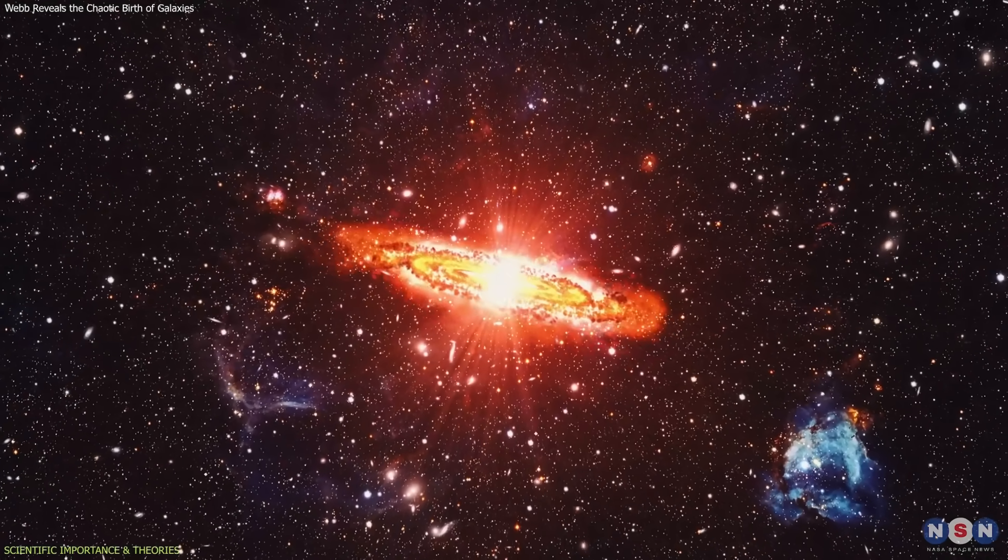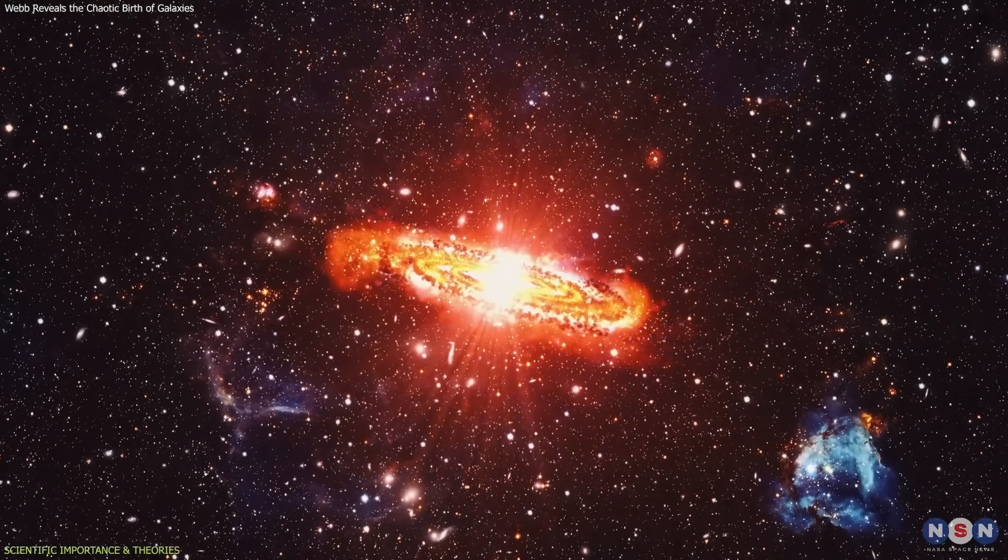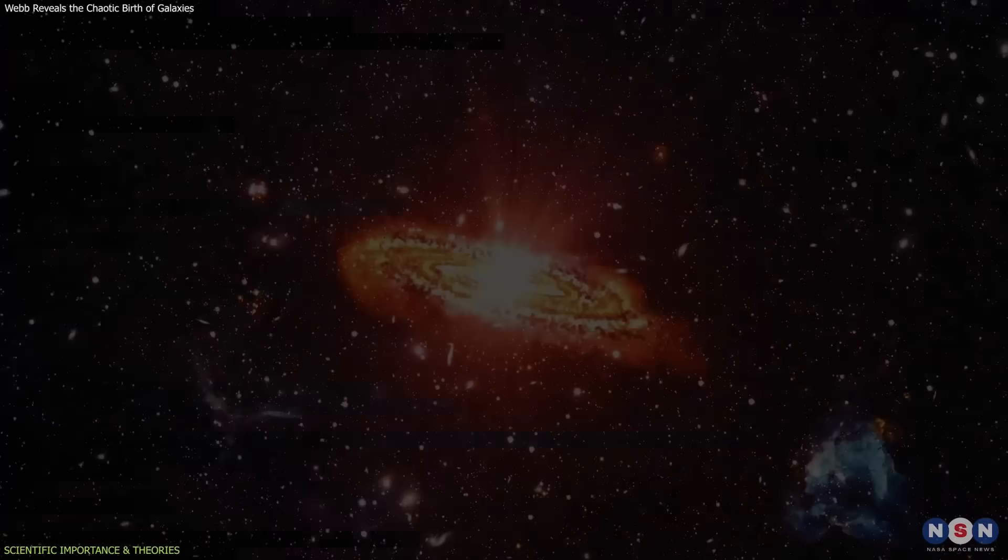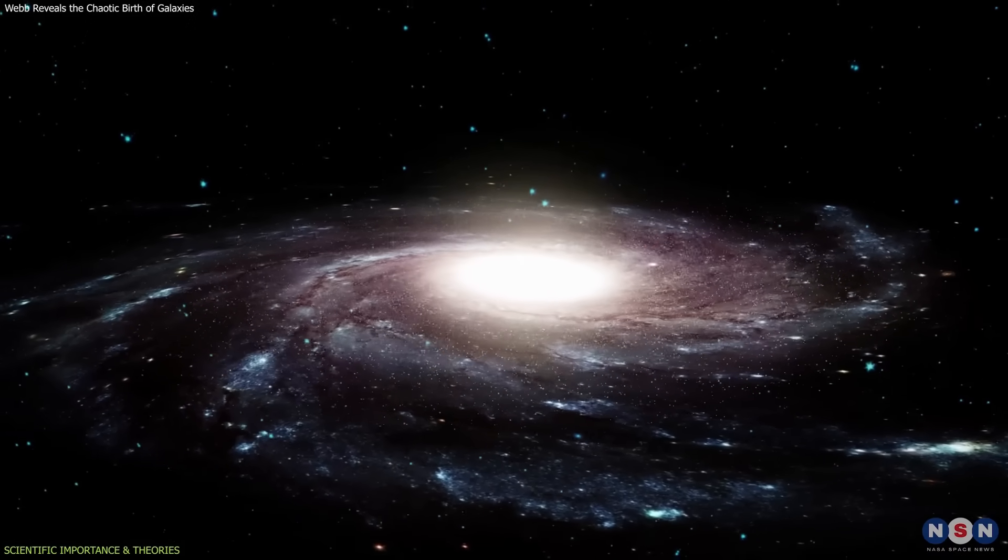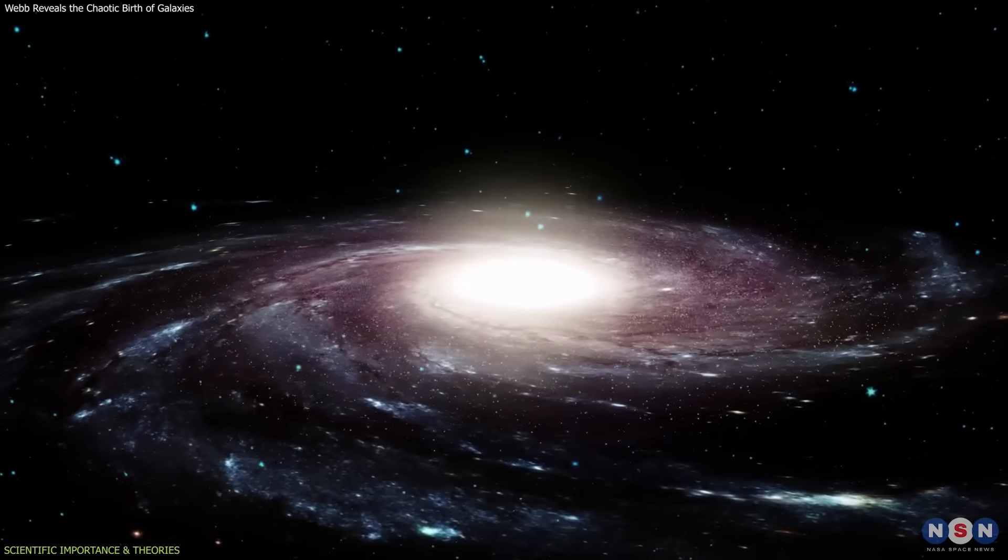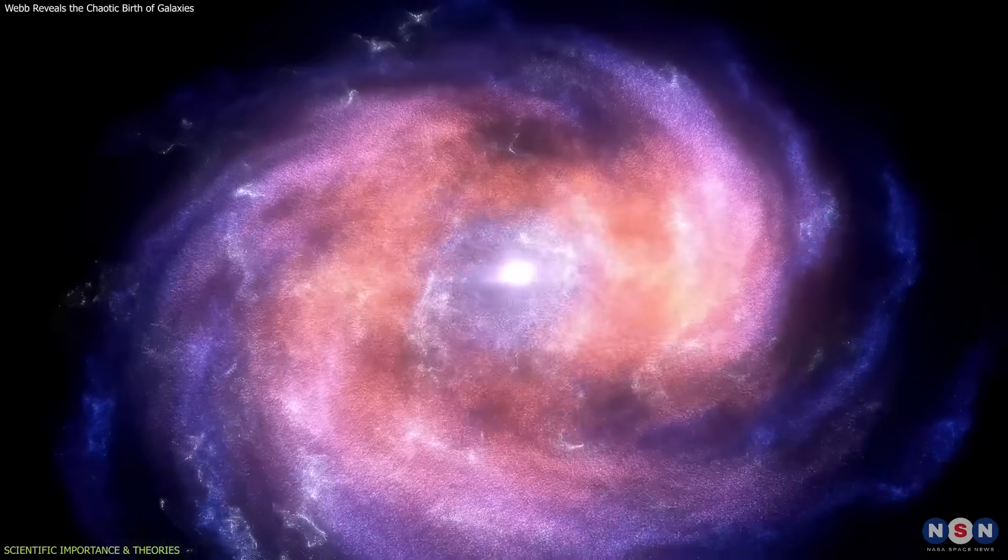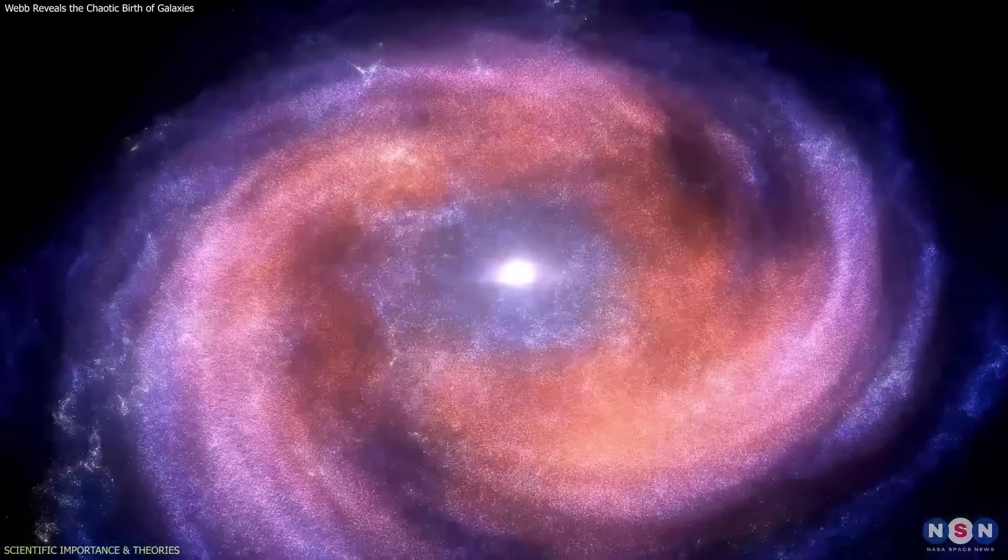Third, gradual disk formation. Only a few galaxies showed signs of rotation. This supports a scenario where stable disks form gradually over time. As galaxies grow in mass, their gas cools, and interactions lessen.